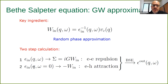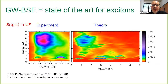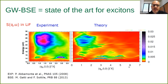The Bethe-Salpeter equation in the GW approximation is the state-of-the-art method for the calculation of excitons in solids. Here I'm showing a comparison between the dynamical structure factor measured by inelastic X-ray scattering as a function of energy and momentum (on the left) and the calculation of the same quantity in lithium fluoride (on the right). Lithium fluoride is a prototypical wide-band-gap material with important excitonic effects. You can observe that the lowest-energy exciton has a dispersion as a function of momentum transfer, and this is very well reproduced by the calculations in this approximation.